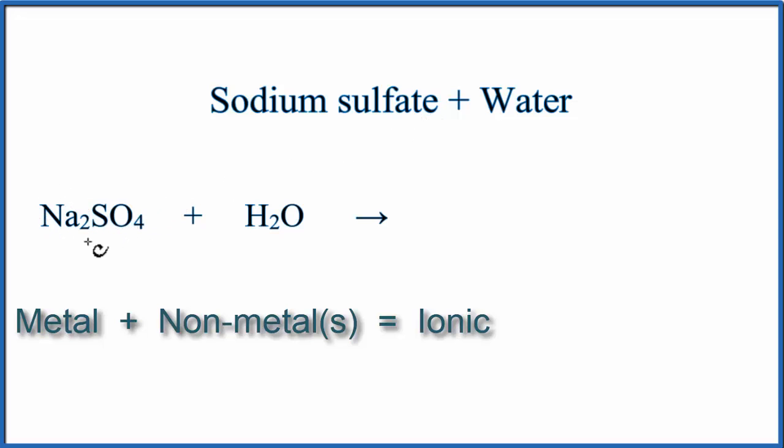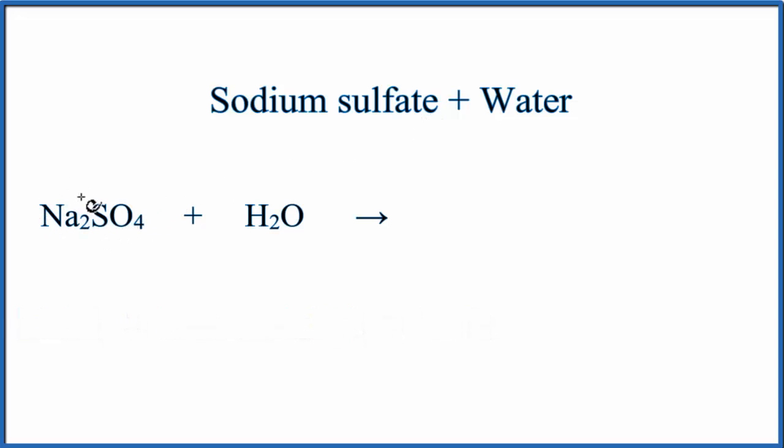Because it's ionic, we look up sodium on the periodic table. It's in group 1, that means its ionic charge is going to be a plus 1. And then SO4, the sulfate ion, we look on a table of common polyatomic ions, and that has a 2- charge.